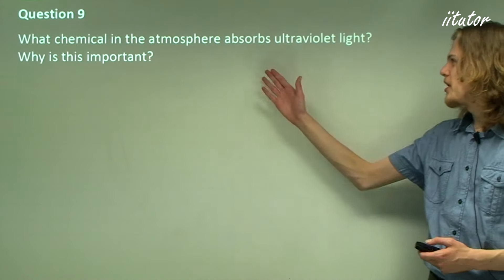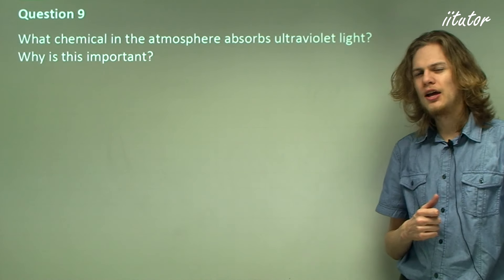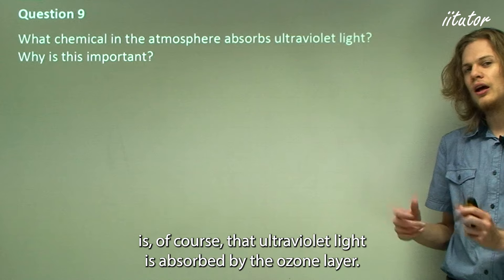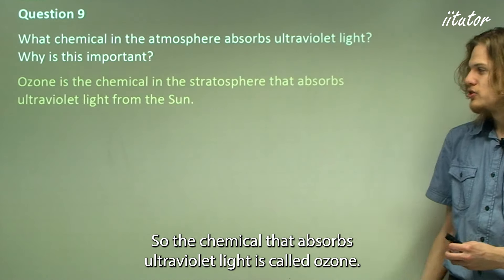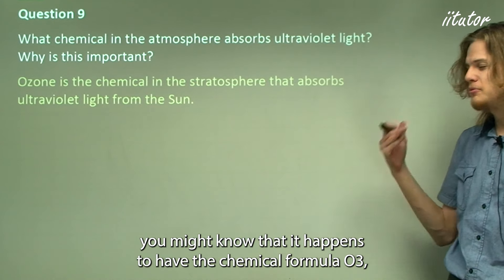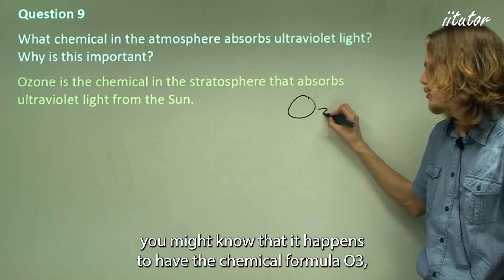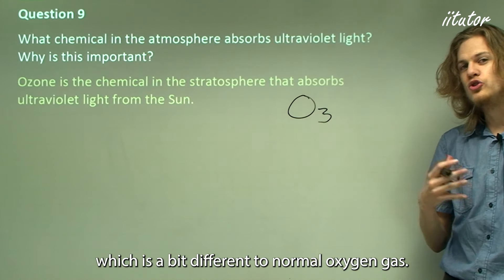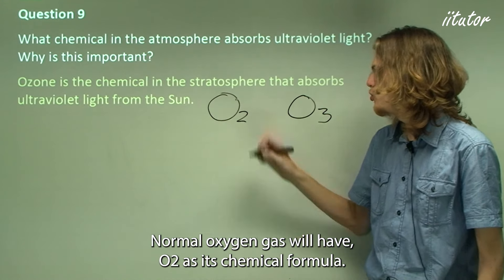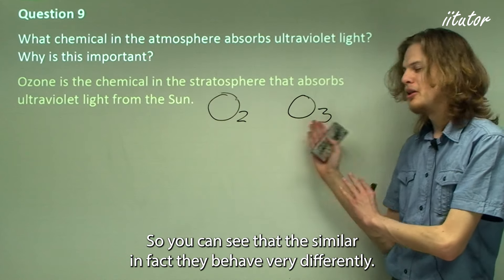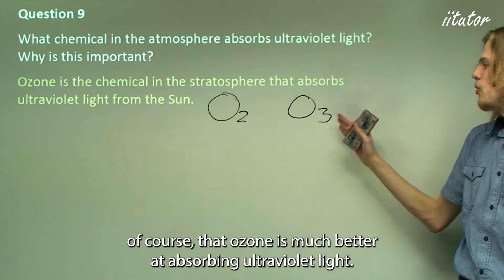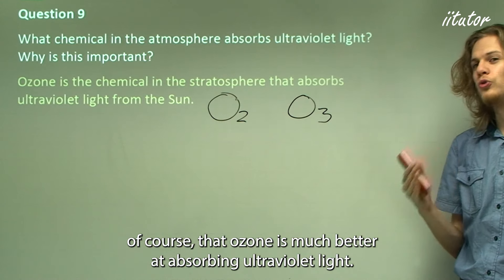Question 9: What chemical in the atmosphere absorbs ultraviolet light, and why is it important? The answer is ozone — the chemical that absorbs ultraviolet light is called ozone. If you're a chemist, you might know it has the chemical formula O₃, which is different from normal oxygen gas, O₂. They're similar, but in fact they behave very differently — ozone is much better at absorbing ultraviolet light.